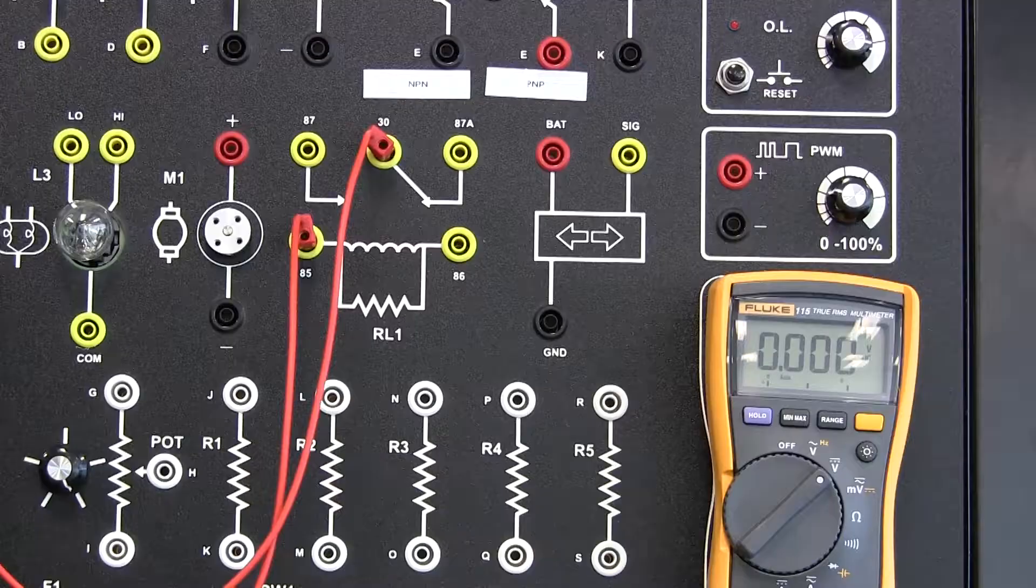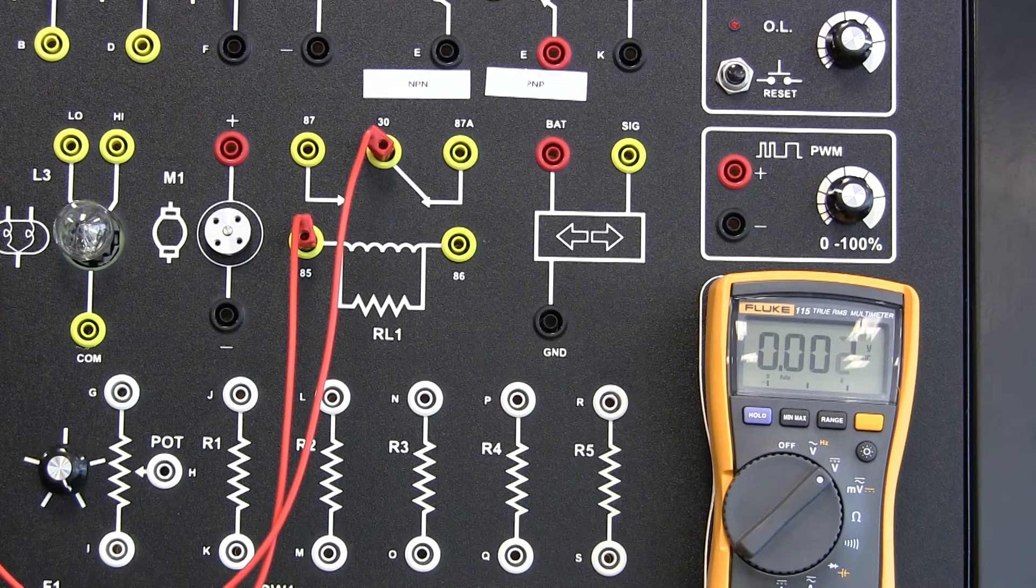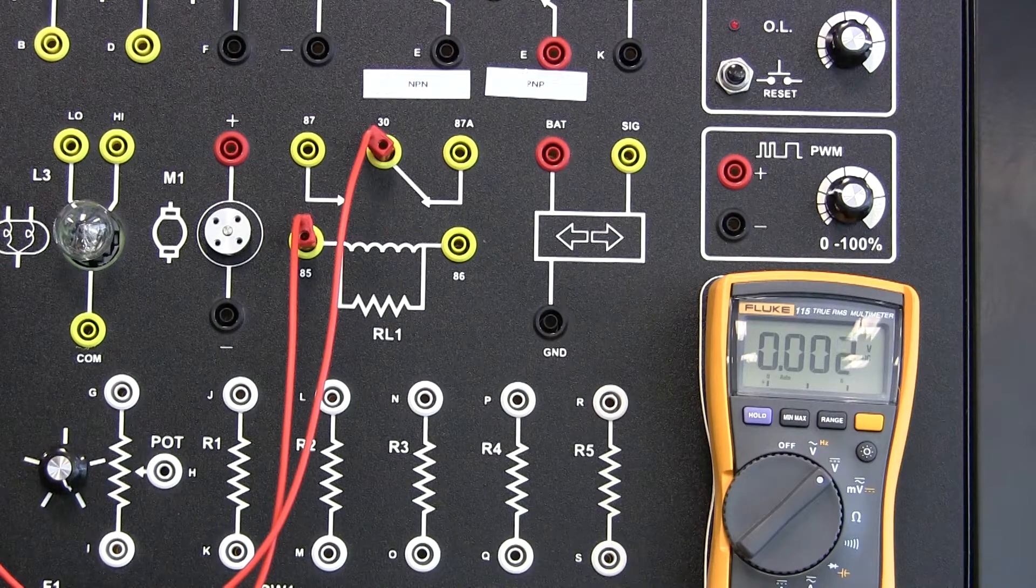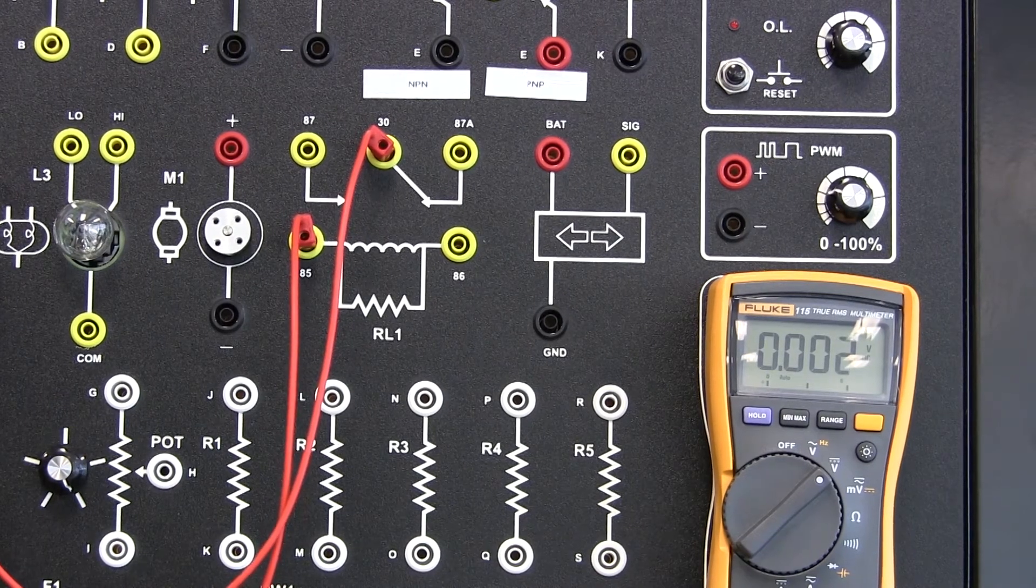Now let's look at how they work. Most commonly, relays will receive power at two terminals. In this case, you should have power at terminal 30.